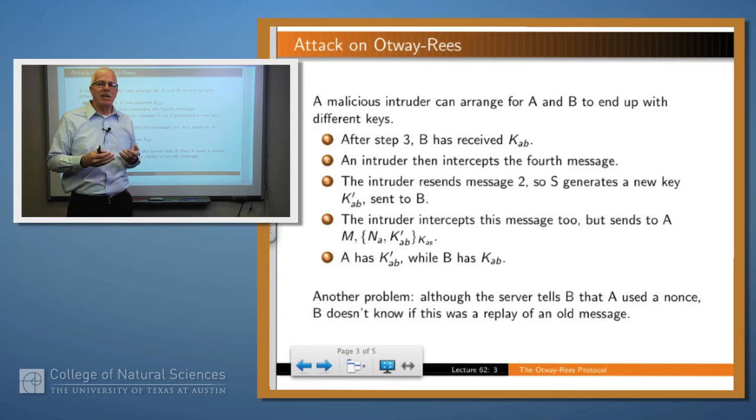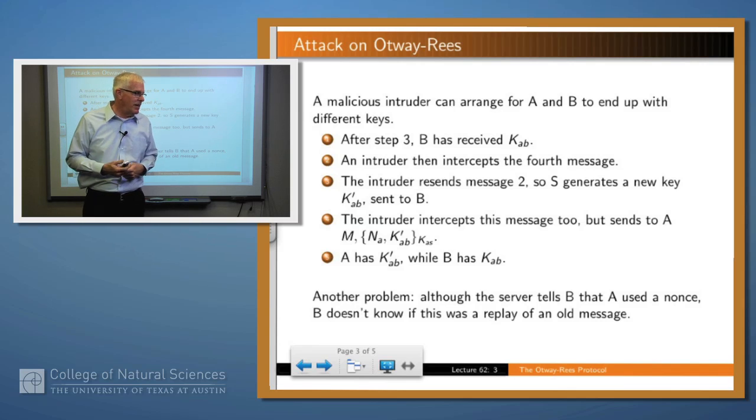by cleverly intercepting some messages and sending others, can convince A that it should use a particular key and B that it should use a different key. So the attacker can mess up the intended result of the protocol because A and B end up with different keys.